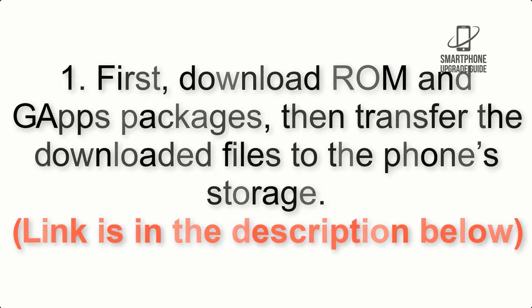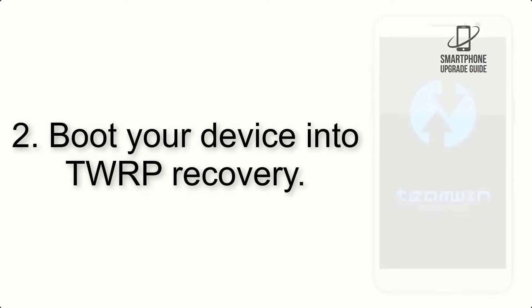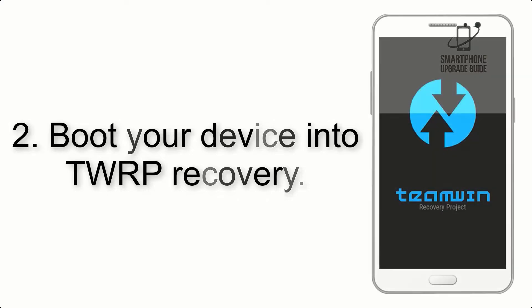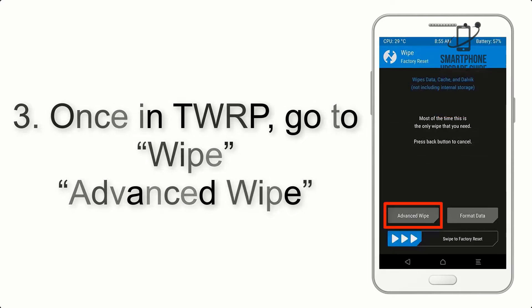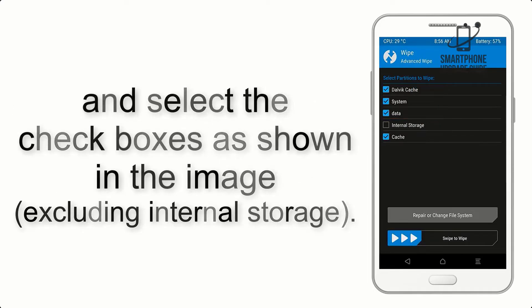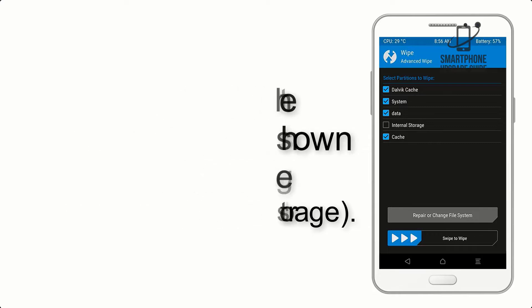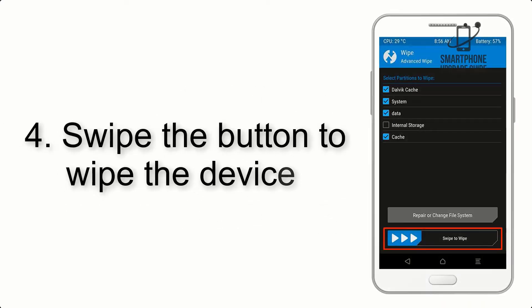Step 2: Boot your device into TWRP recovery. Once in TWRP, click on Advanced Wipe and select the checkboxes as shown in the image, excluding internal storage.